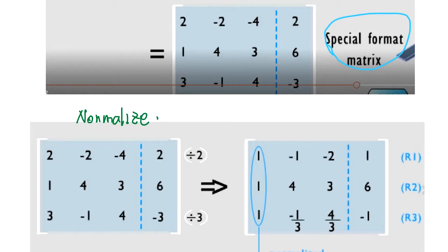What's normalize means we make the coefficient all one here. By what? Here, this is 2. So this row divided by 2. This row divided by 3.